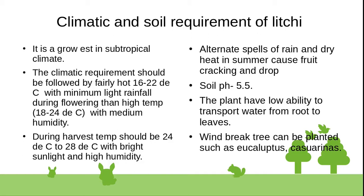The plant has low ability to transport water from root to leaf. Windbreak trees can be planted, such as Eucalyptus and Casuarina.